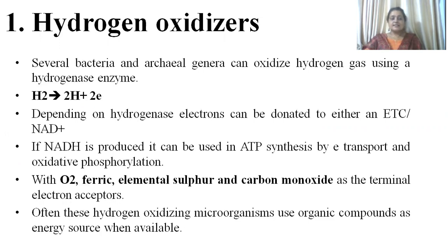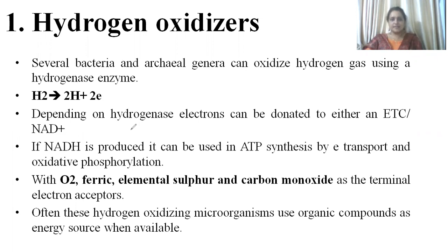Hydrogen oxidizers: several bacterial and archaeal species are able to oxidize hydrogen as they possess the enzyme hydrogenase. The equation they follow is: H₂ → 2H⁺ + 2e⁻. Depending on the hydrogenase enzyme, they donate their electrons either to the electron transport chain or to NAD — meaning either for ATP synthesis or for reducing power synthesis. If reducing power is produced, it can be used in ATP synthesis by electron transport and oxidative phosphorylation. The terminal electron acceptors in hydrogen oxidizers are oxygen, ferric ion, elemental sulfur, and carbon monoxide. Often, hydrogen-oxidizing organisms use organic compounds as an energy source when available.